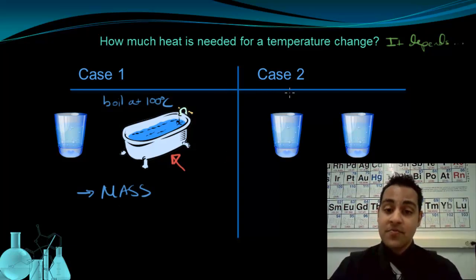Now let's take a look at case two. In case two, I have two cups of water. Let's call them A and B. They have equal masses, or equal amounts of water in them. But I want to heat cup A to 50 degrees Celsius, and I want to heat cup B to 90 degrees Celsius.